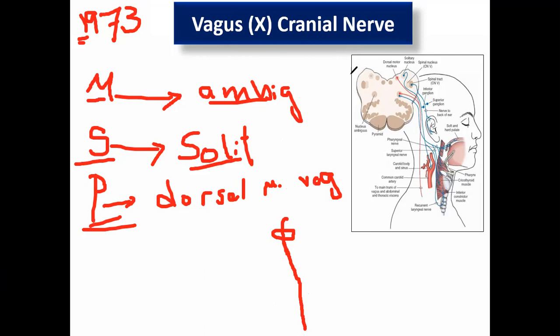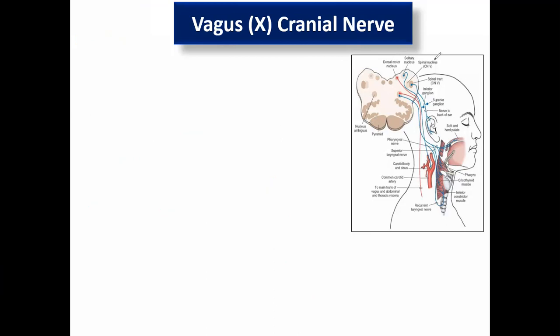The vagus supplies the heart and the lung, then enters the abdomen to supply the GIT until the left colic flexure. It is a long nerve — the vagus nerve. Its branches include the auricular branch, which supplies the auricle and external acoustic meatus.